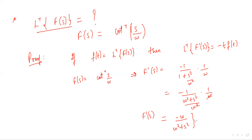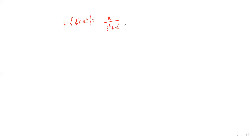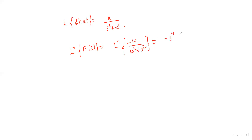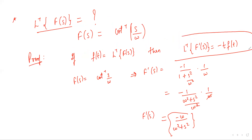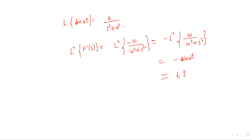This is now in a standard form. The Laplace inverse of this function involves sine. Specifically, ℒ⁻¹{-ω/(ω² + s²)} = -sin(ωt). Using the formula, ℒ⁻¹{F'(s)} = -t·f(t), so -sin(ωt) = -t · ℒ⁻¹{F(s)}.